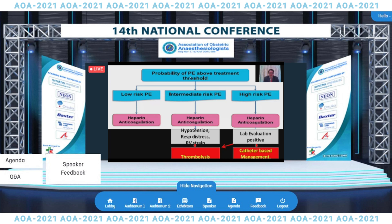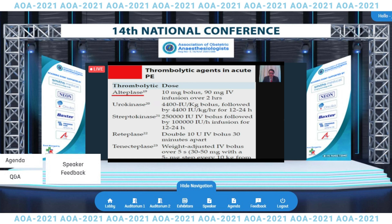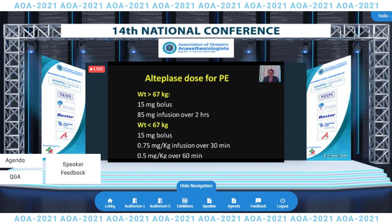In a treatment chart: low-risk patients receive anticoagulation alone; intermediate-risk patients receive anticoagulation plus thrombolysis; and high-risk patients receive heparin, anticoagulation, thrombolysis, and possible interventions such as catheter-based techniques or thrombectomy. The only agent currently popular is alteplase, given as a 10 mg bolus followed by 90 mg infusion over two hours. If weight exceeds 67 kg, the dose is 15 mg bolus with 85 mg infusion over two hours.